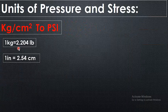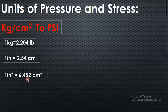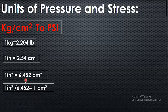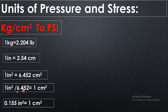Since 1 kg is equal to 2.204 lb and 1 inch is equal to 2.54 centimeters, taking the square on both sides, 1 square inch is equal to 6.452 centimeter square. Therefore, 1 centimeter square is equal to 1 divided by 6.452 square inches. Simplifying this value, we get 1 square centimeter is equal to 0.155 square inches.